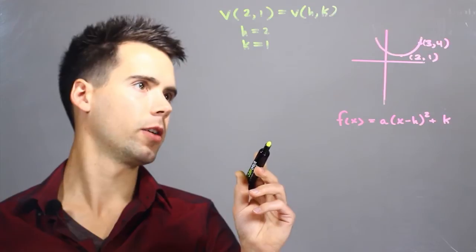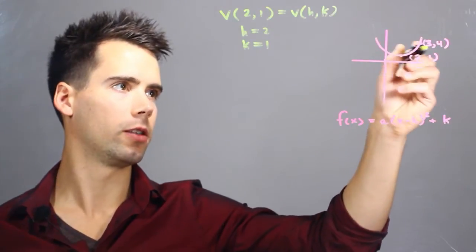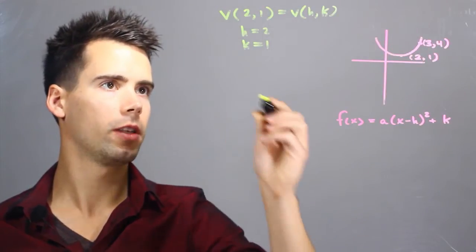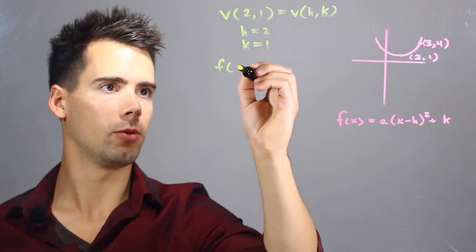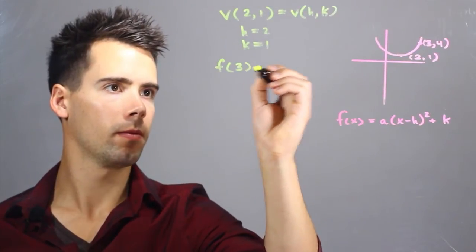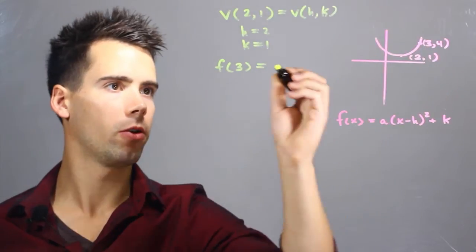Now the next step is to identify what this point actually means here. So 3 and 4. What this implies is that f(x) when x equals 3 is equal to the y value, 4.